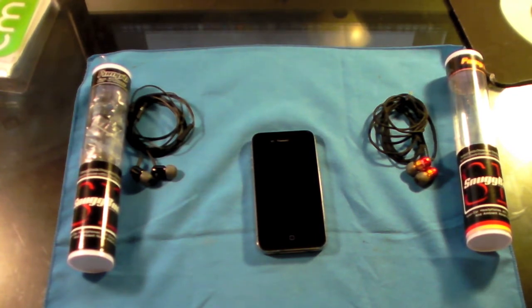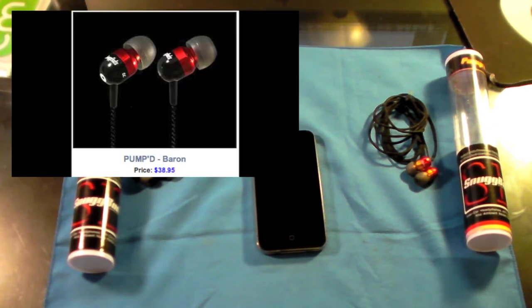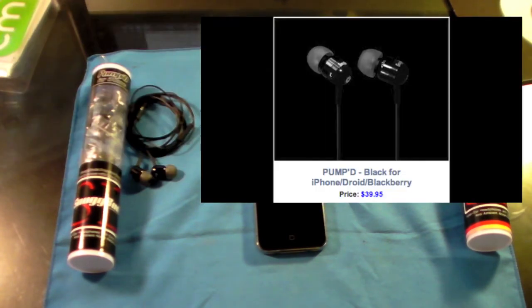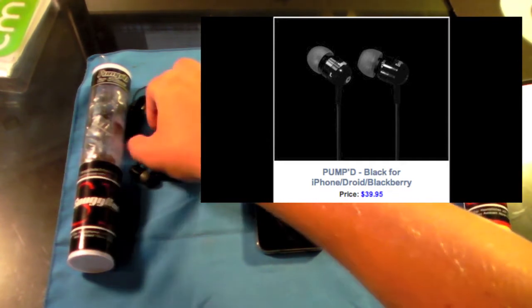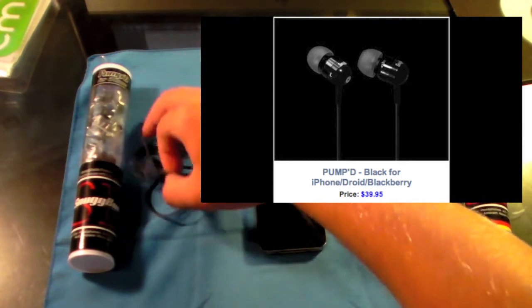They come in multiple different flavors, so I'm just going to run through the prices. You can get the Pumped Baron for $38.95, they have a braided design and they're black and red. Then you can also get the Pumped for the iPhone/Droid/Blackberry. These will run you $40, and that's what I have right here with the inline microphone but not a braided design.